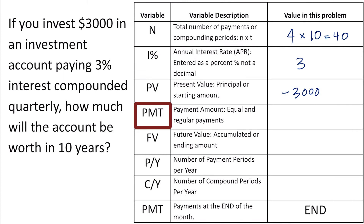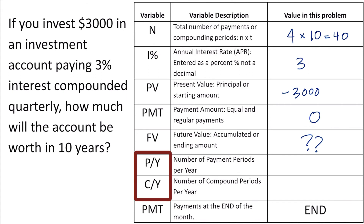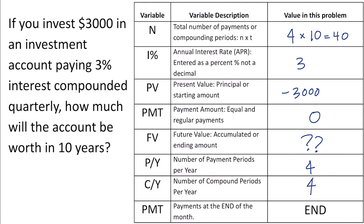PMT stands for our payment amount. This is a one-time lump sum investment — the problem does not say we are making any additional contributions, so we can assume the quarterly payment is zero. The future value — how much will the account be worth in 10 years — is what we're solving for. PY and CY are both four since interest is compounded quarterly. The last variable, PMT at the bottom, is fixed at end.